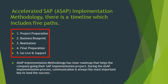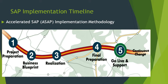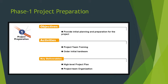ASAP methodology has a clear roadmap with five phases: project preparation, business blueprint, realization, final preparation, and go live and support. As you can see on the screen, this is the full accelerated implementation methodology roadmap — the first step is project preparation, the second is business blueprint, the third is realization, fourth is final preparation, and fifth is go live and support. We'll now see each phase one by one.